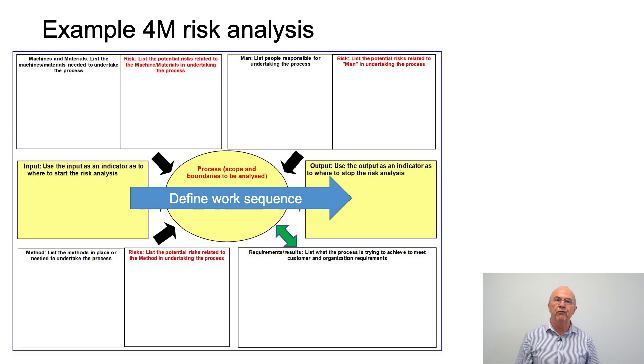What we see here is an example of a 4M risk analysis. The first thing the team would do is to define the boundaries: where are we going to start the 4M risk analysis and where are we going to finish. It's really clear that we do this before we go on to understanding the 4M that will affect the process. The next thing the team needs to do within this particular step is to define the proposed work sequence.